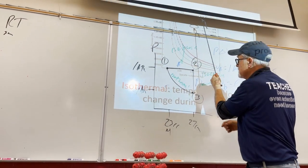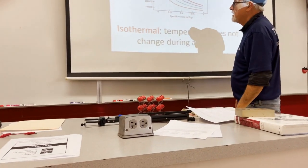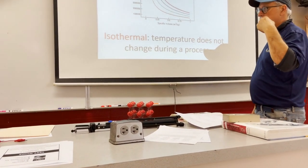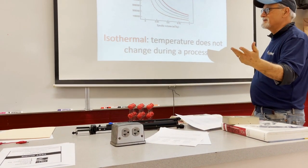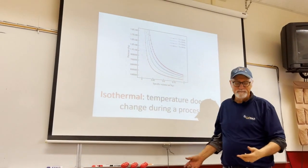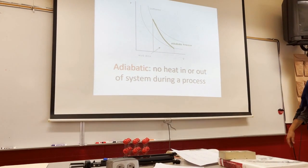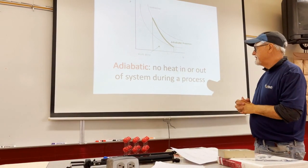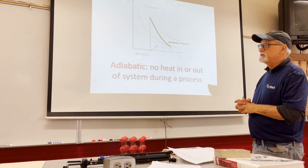To summarize: isobaric — pressure stays the same; isochoric — volume stays the same; isothermal — temperature stays the same. The fourth process type is adiabatic — no heat flows in or out during the process, so ΔQ = 0.